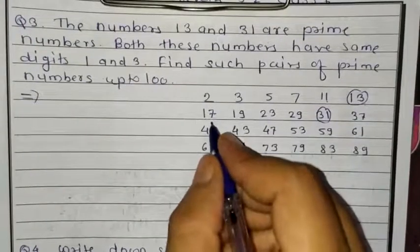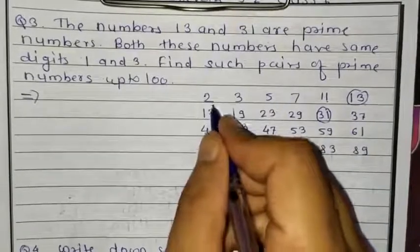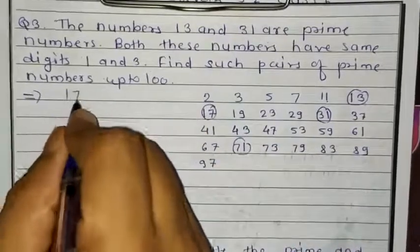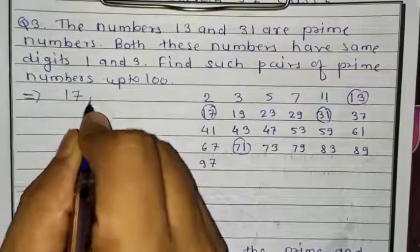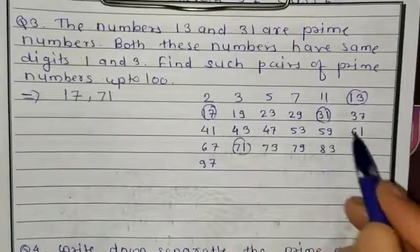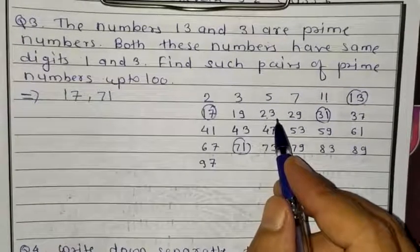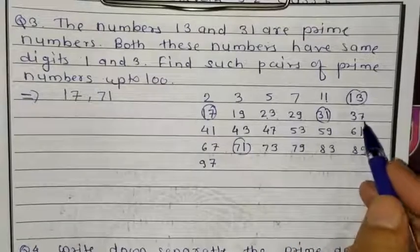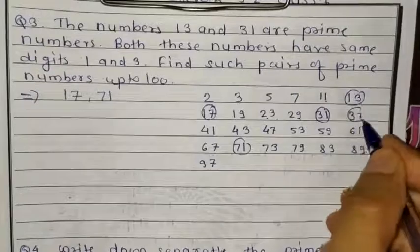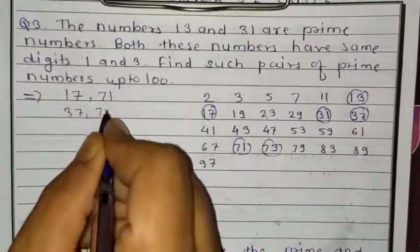Checking from 17: 71 is also present in the prime list, so one pair is 17 and 71. Next, 19: 91 is missing. 23: 32 is not prime. 29: 92 is not prime. 37: check 73 — yes, it is present. So the next pair is 37 and 73.